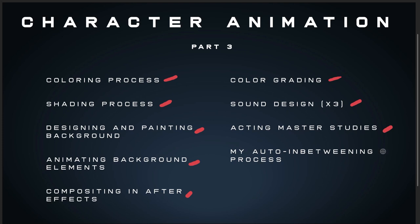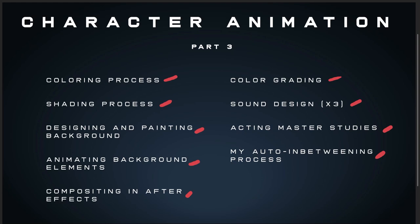We finish with some acting master studies, looking at live-action film and some of the best performers in the world, breaking down what makes those performances great and how to incorporate that into our animation. As a bonus, there's a process for auto in-betweening — understanding how to let the computer generate in-betweens for you, saving a huge amount of time. I show a little example from the animation where I didn't draw the in-betweens — the computer generated them for me.